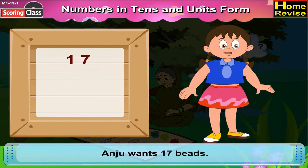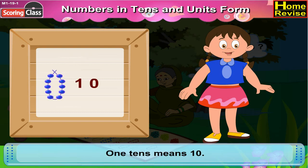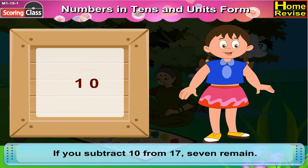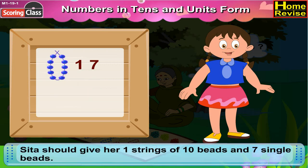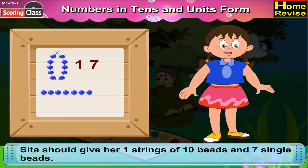Anju wants 17 beads. As you know, 1 tenth means 10. So, if you subtract 10 from 17, that means 7 remain. So, Sita should give her 1 string of 10 beads and 7 single beads.